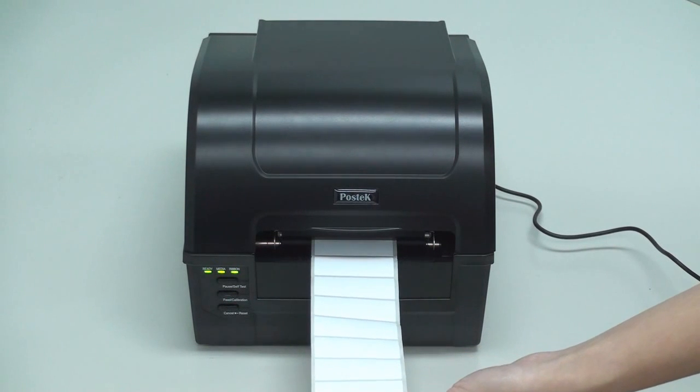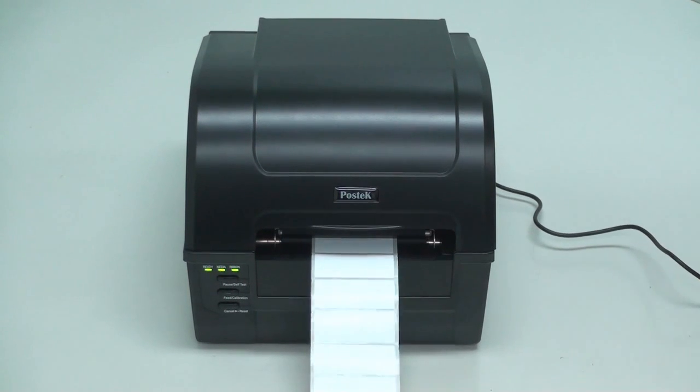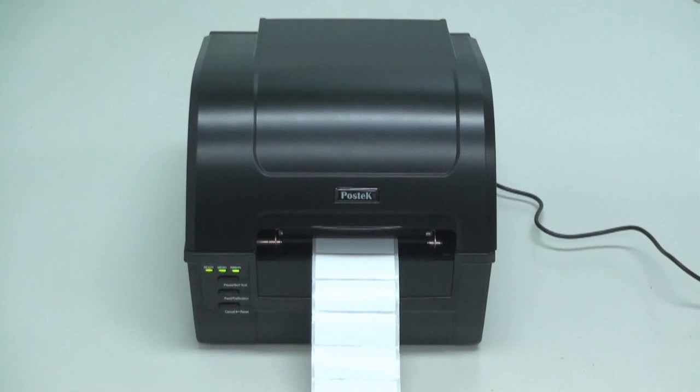The three indicator lights will stop blinking, but will remain lit. The media calibration is now complete, and the C168 printer is ready for your print job. Just remember, anytime you change the label size, perform a media calibration.